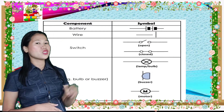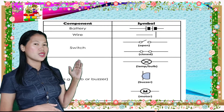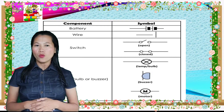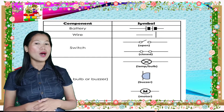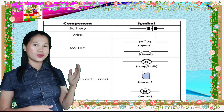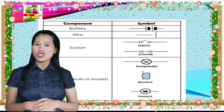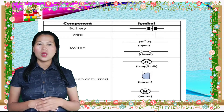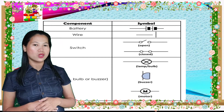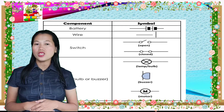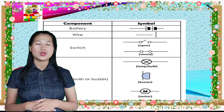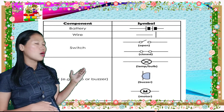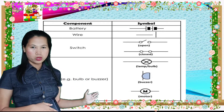Battery is the source of electricity. A wire is the pathway of electricity from the source. Switch is used to turn on or off a load. Load is an appliance or device that uses electricity from a source. Examples include a bulb, buzzer, and motor.